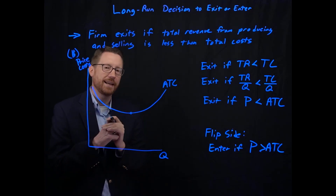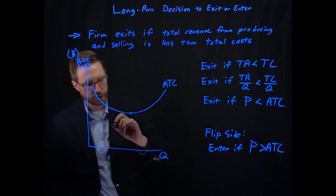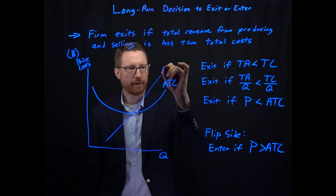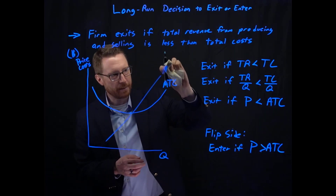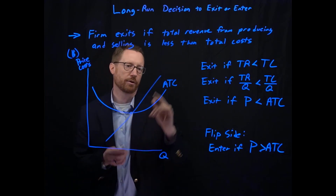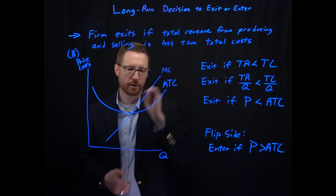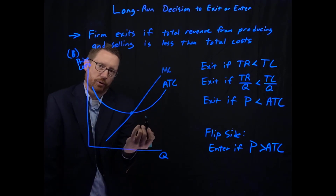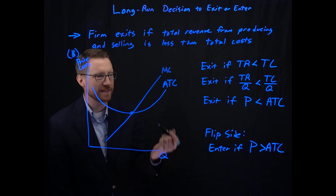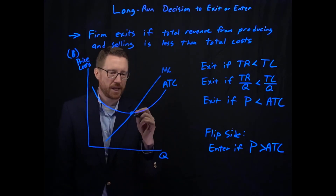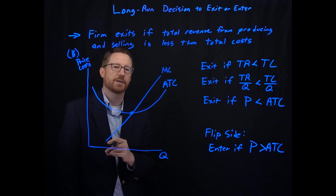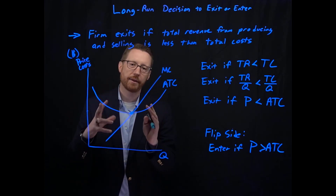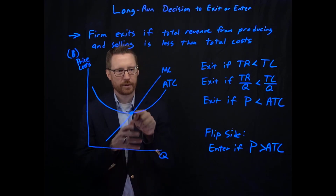The other line we need to add is marginal cost. Marginal cost crosses through average total cost at the bottom of average total cost — at the minimum average total cost. Why do these two cross at the minimum? If the next unit you produce is more expensive than the average, it's going to pull up the average. That's why they cross there.